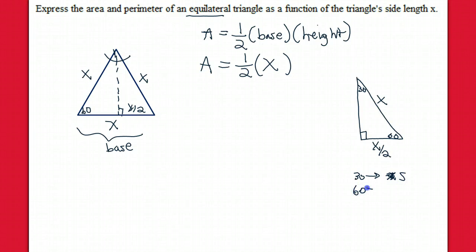And then opposite to 60 is s root 3. And the right angle opposite to 90 is twice s. That's the SAT special right triangle relationship between the sides.